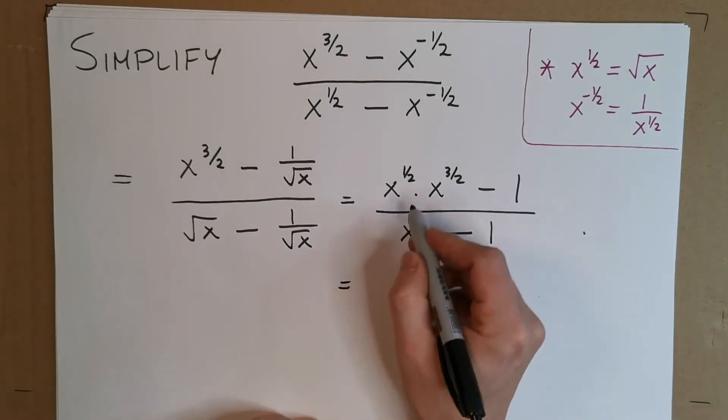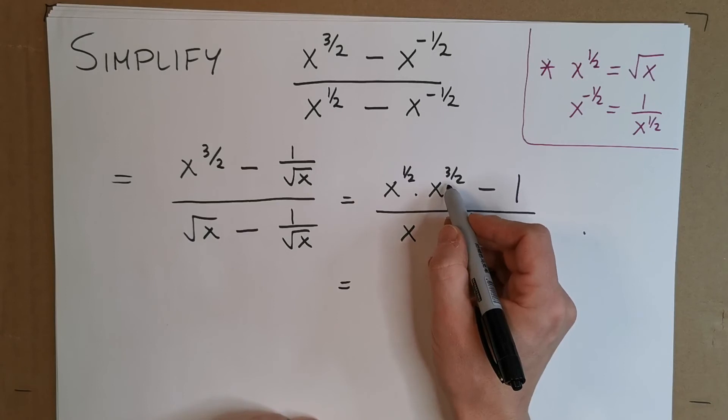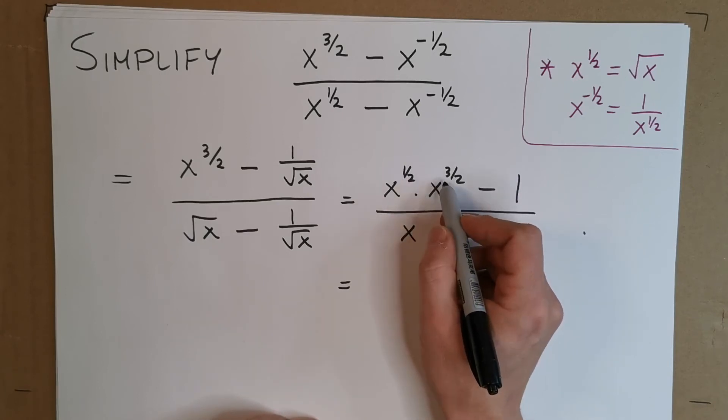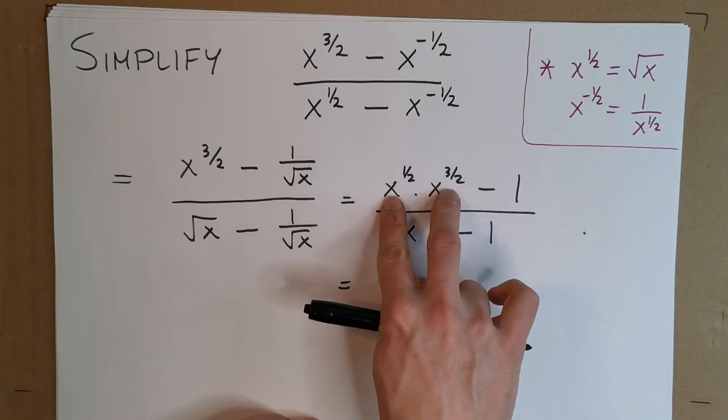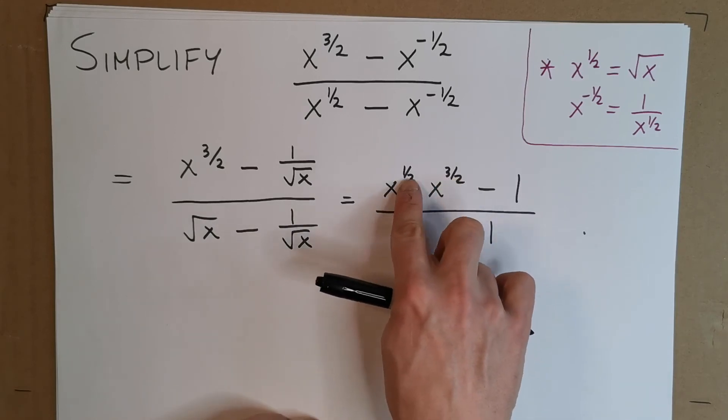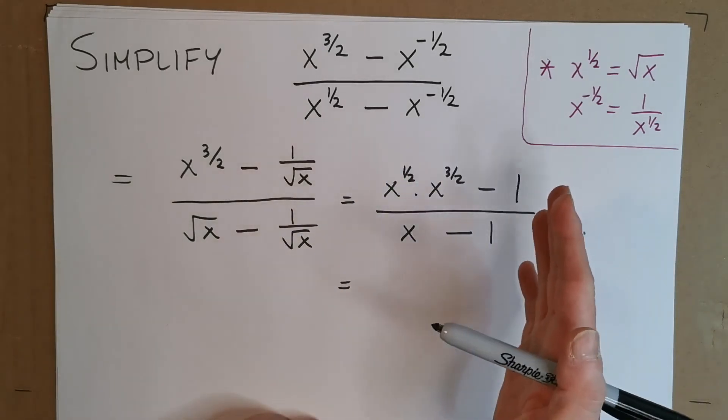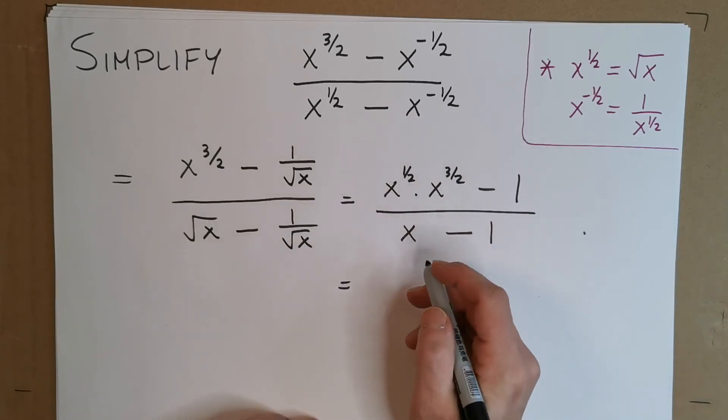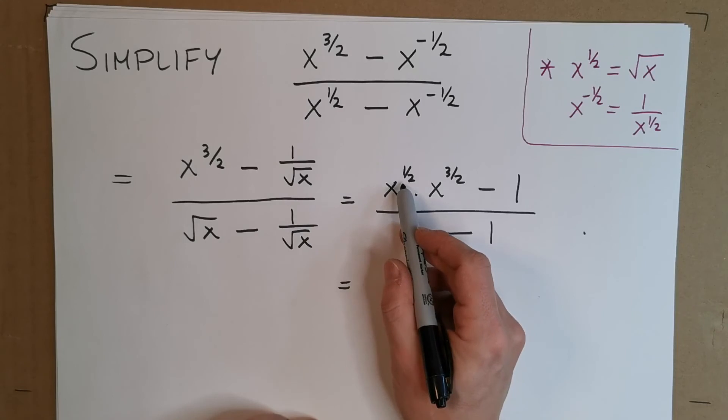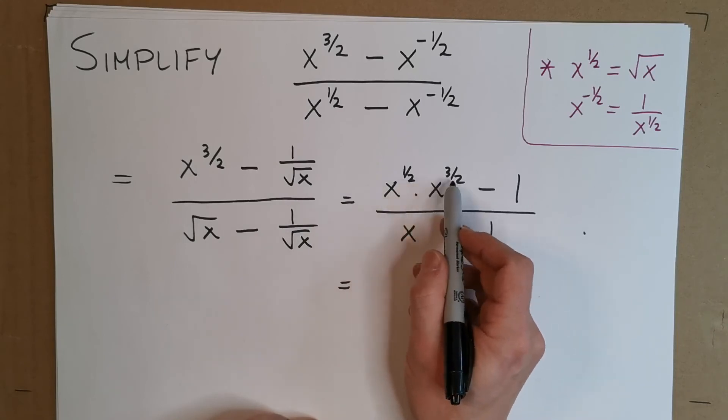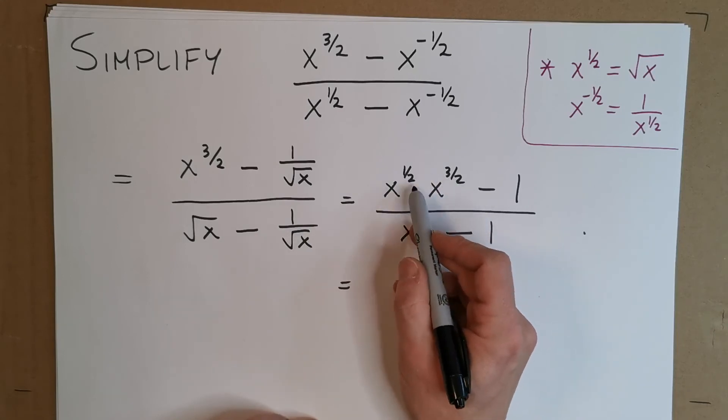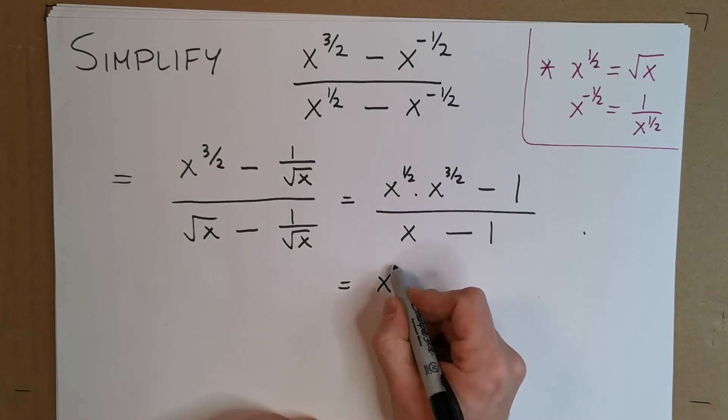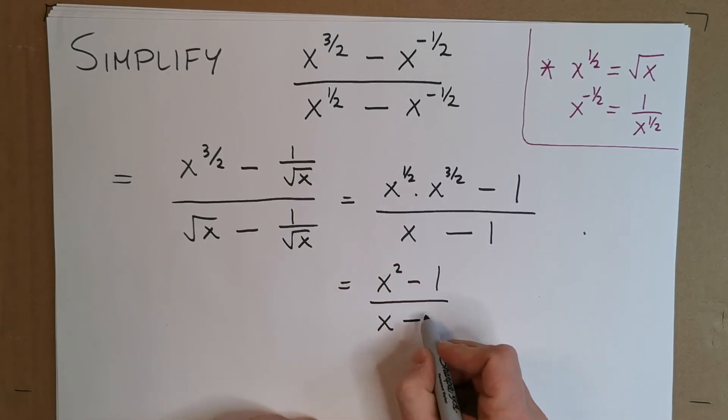Well, x to the half times x to the 3 over 2, from rules of indices, what would we do with these two powers, do we add or multiply them? So these are the same base, so we can actually add them. If it was a power to a power, that's the only condition where we multiply, that's something you have to get used to noticing or recognising. So x to the power of a half times x to the power of 3 over 2, we actually add these powers. This is 1 and a half, this is a half, that ends up being x to the power of 2, minus 1, over x minus 1.